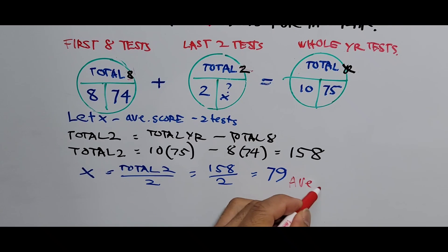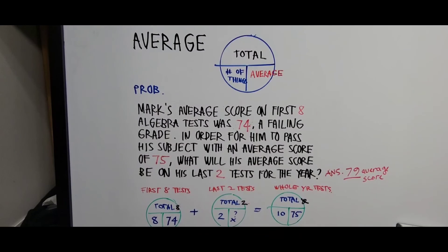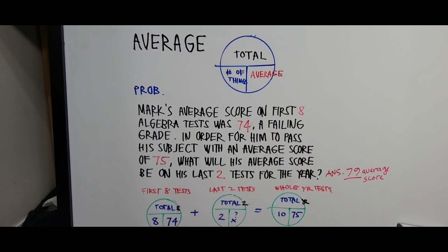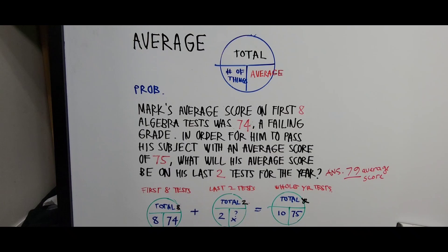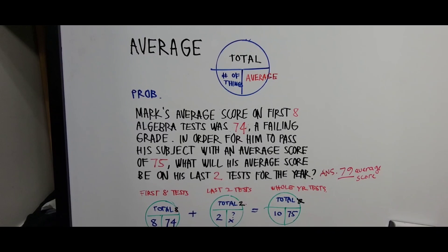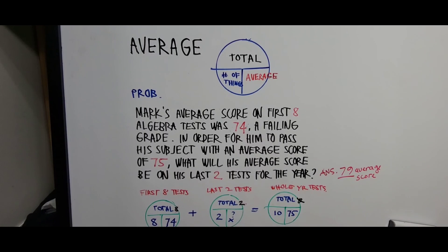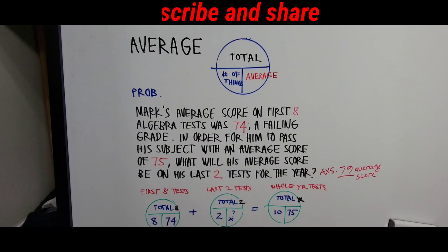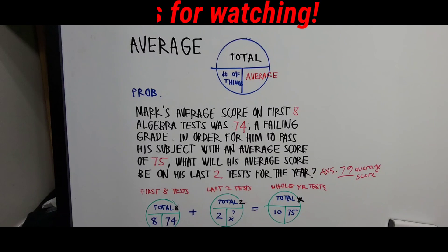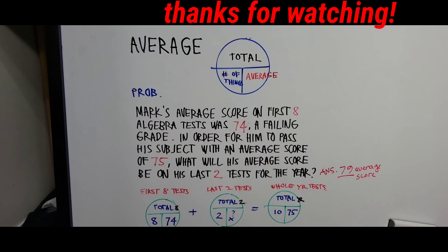So 79 is the average score for the last two tests. He passed the subject by having an average of 79 on his last two tests for the year. Thank you for following my lecture. If I helped enlighten you on how to solve an average problem using the average pie, I'd appreciate it if you hit the like button, subscribe, and share. Thank you and have a great day!